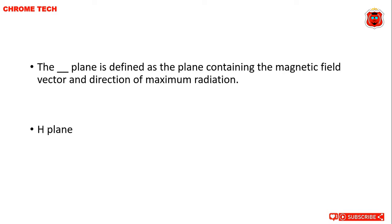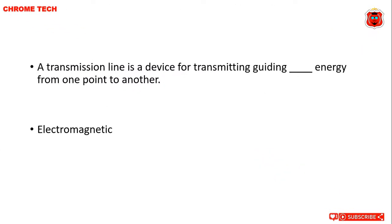A transmission line is a device for transmitting, guiding, and dash energy from one point to another. The correct answer is electromagnetic energy.